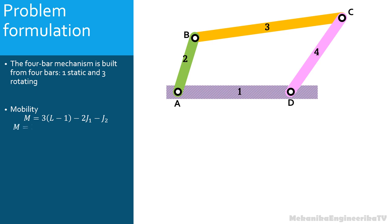Here, L is equal to 4 as there are 4 bars; J1 is equal to 4 as 4 pin joints are used to assemble the bars; and J2 is equal to 0 as there is no cam or gear kinematic pair. Thus, mobility is equal to 1. The number of unknowns is given by L minus 1 minus M. There are L minus 1 moving bars and we need a displacement parameter for each bar. We also need to know as many parameters as the number of mobility, so we subtract M.